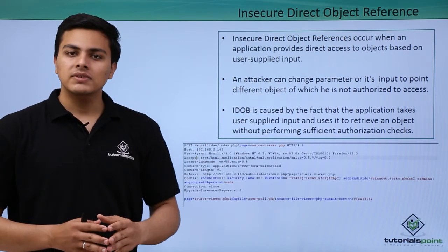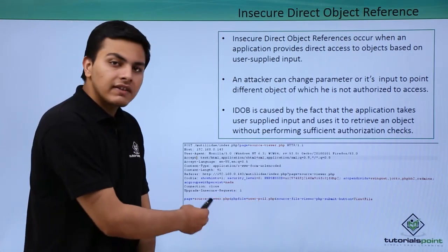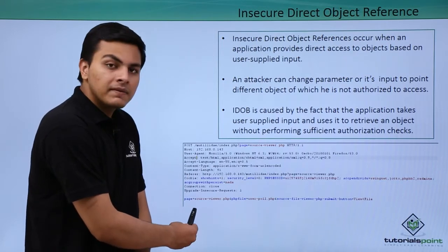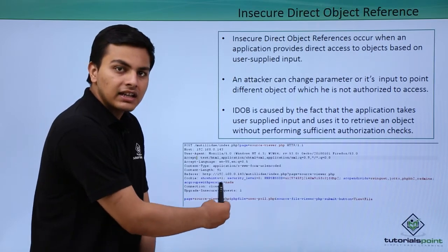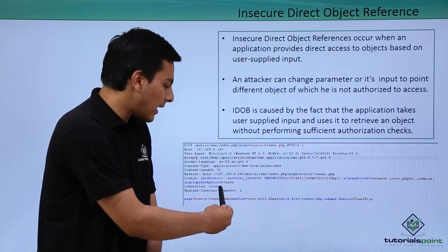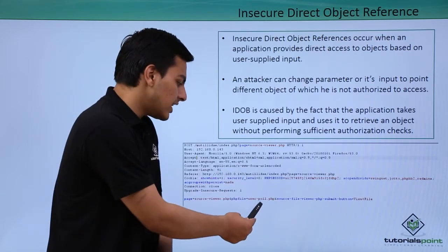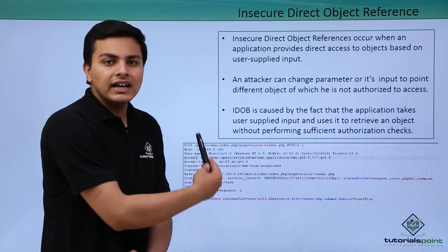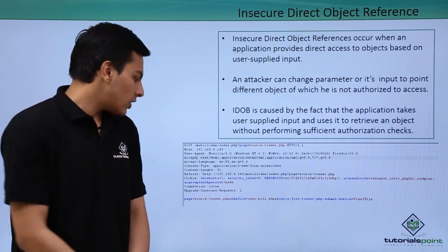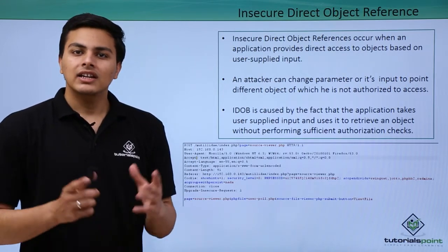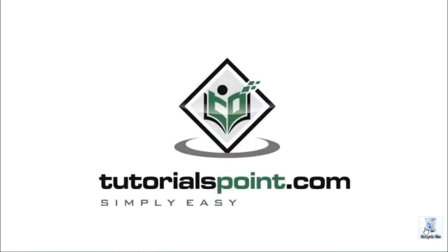Here is one HTTP request. This request accepts a parameter called 'page', and the page name is sourceviewer.php — this is our reference page. There is another parameter called 'php file', and the PHP file we are trying to access is called userpoll.php. We can access userpoll.php by making an HTTP request with the reference of sourceviewer.php.